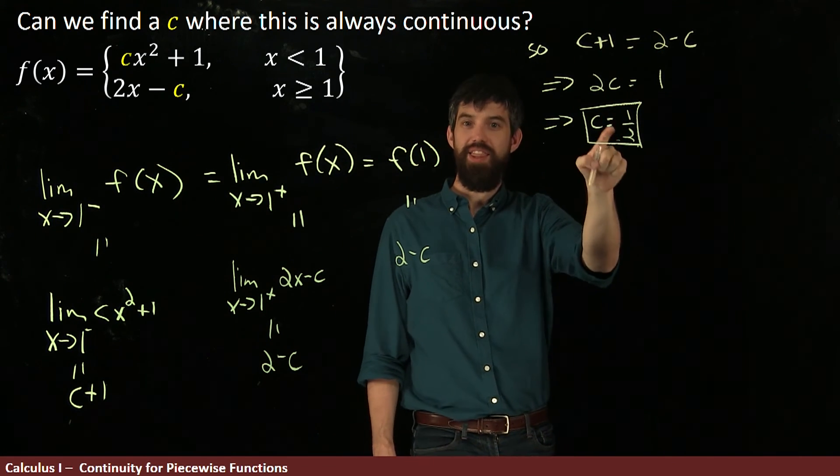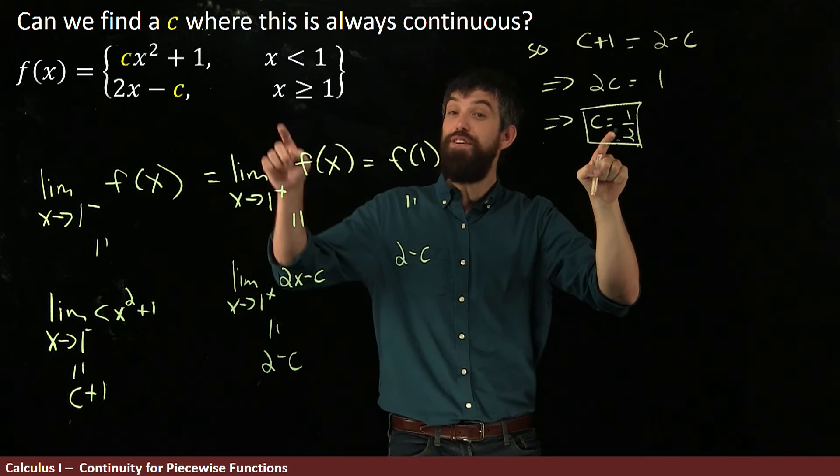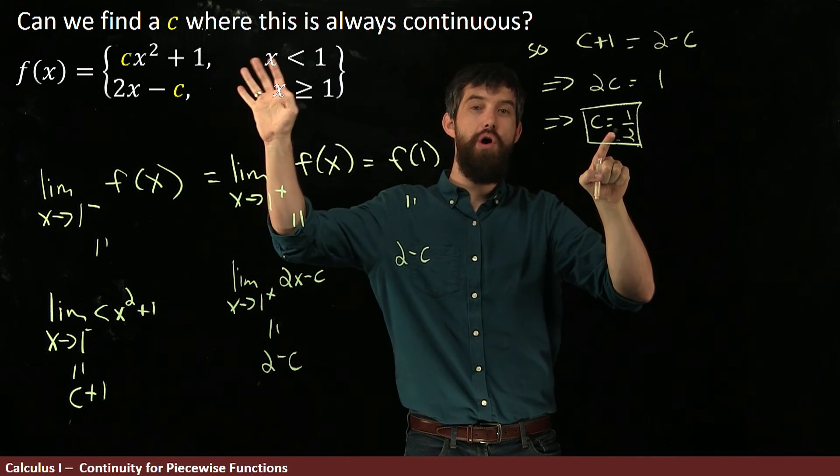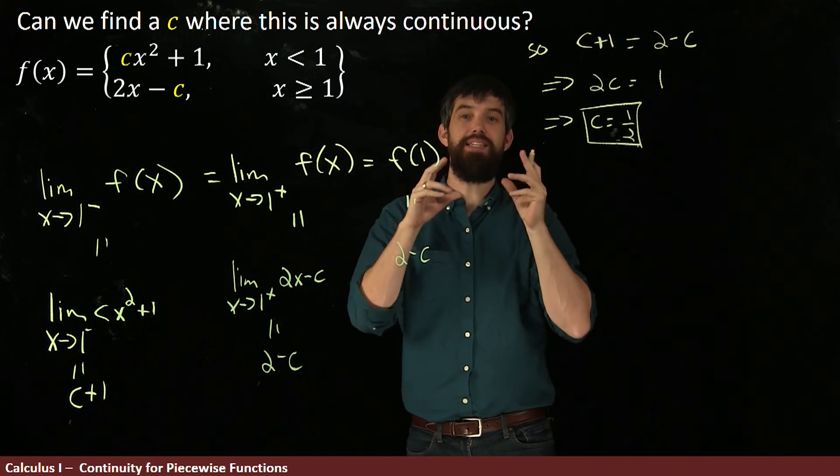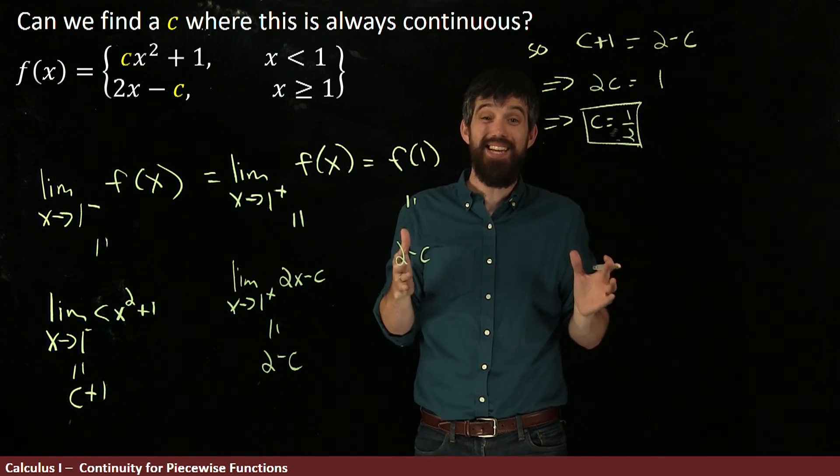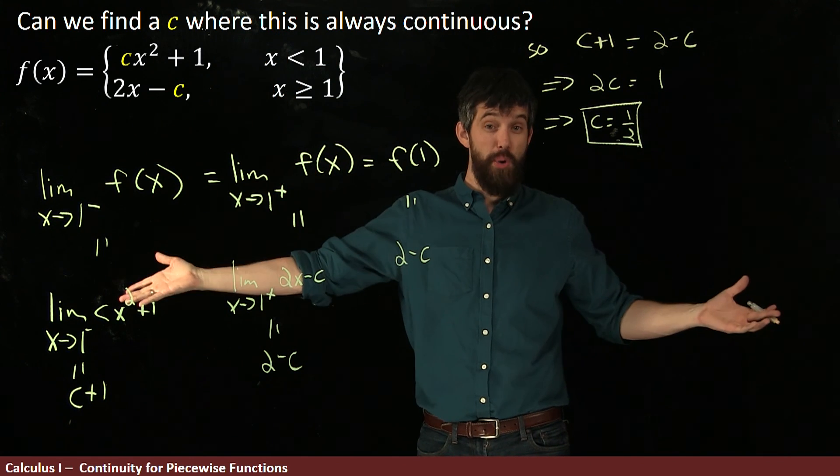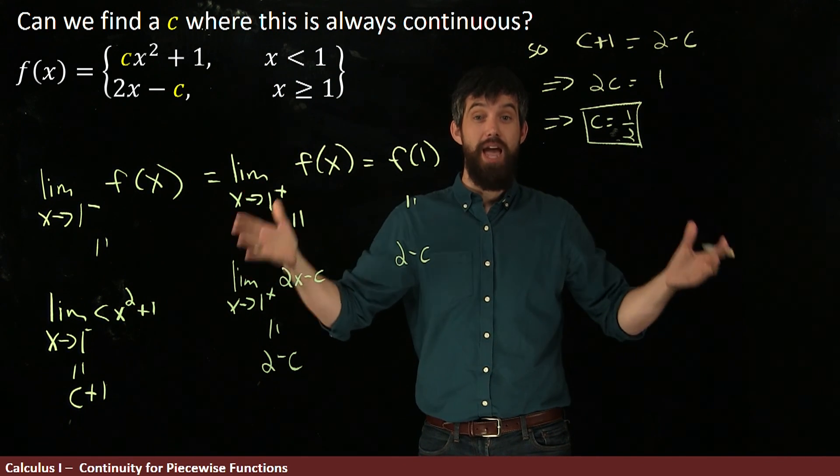And indeed, when I do this, this value of c equal to 1 half, it fixes the potential discontinuity at 1. The limit from the left is equal to the limit from the right. So yes, indeed, this is continuous at 1. And because it's continuous everywhere else, as they're polynomials, it's continuous everywhere.